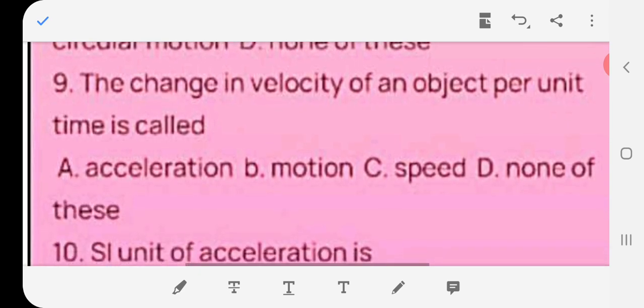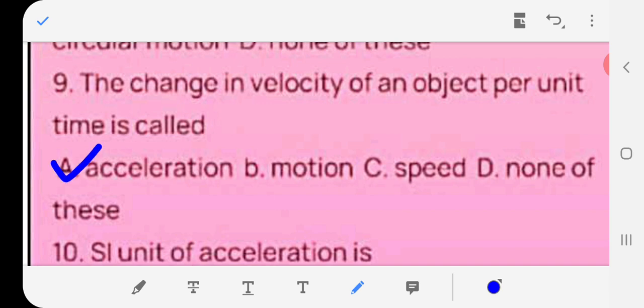The change in velocity of an object per unit time is called, any rate of change of velocity, A acceleration, B motion, C speed, D none of these. The correct answer is A acceleration.